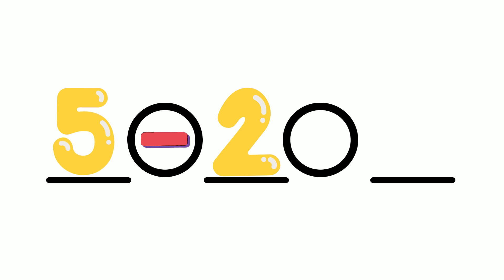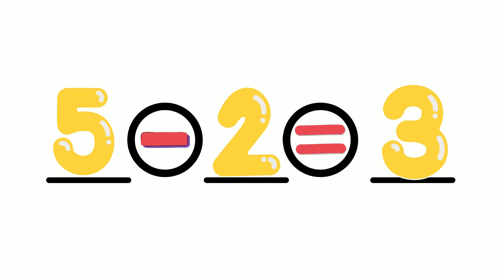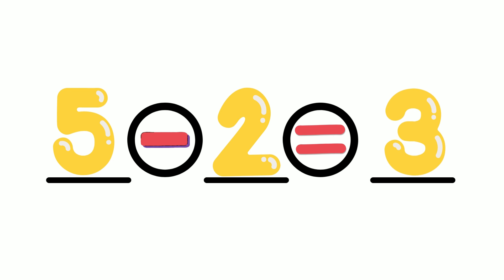Yep, that's correct. Three. Five minus two equals three. Three is the number of giraffes left. I will go ahead and write the equal sign here and the number three right here. Now I have a number sentence. Thank you for helping me solve this subtraction word problem.